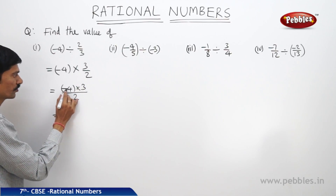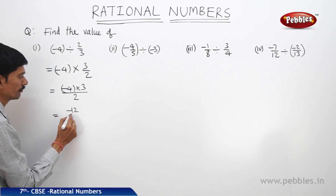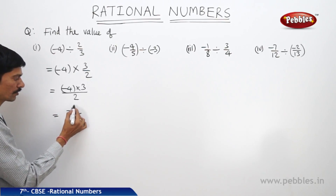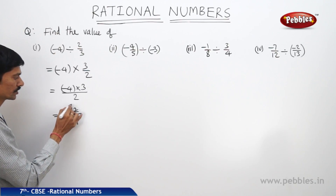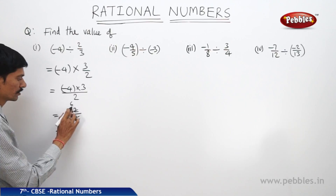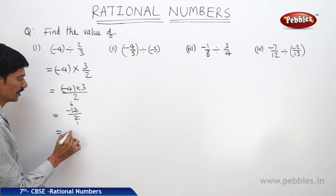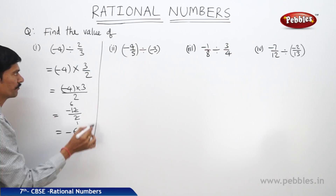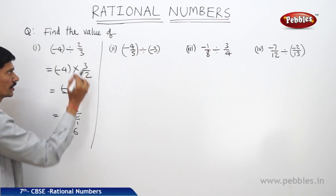So minus 4 into 3 is minus 12 divided by 2. We can cancel 12 and 2 in the 2 times table: 2 ones are 2, 2 sixes are 12. So this gives minus 6 by 1, meaning minus 6. This is the quotient of minus 4 divided by 2 by 3.